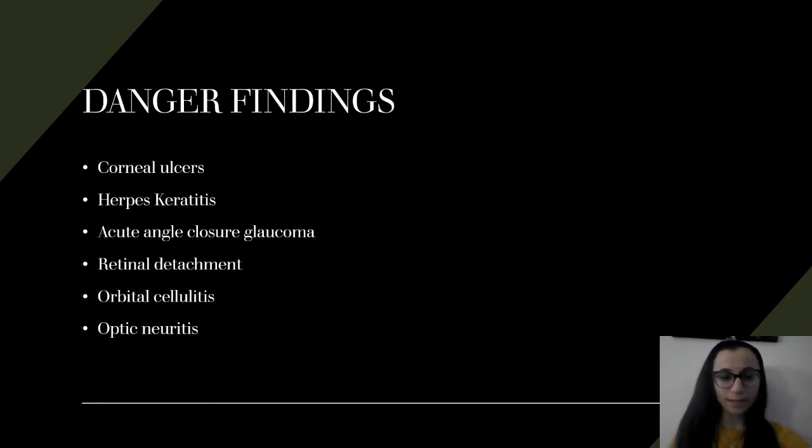Orbital cellulitis is an infection involving the content of the orbit. It's usually a lot of times will come with a history of upper respiratory infection, sinusitis. This is pretty serious. They're going to come in with symptoms of eyelid edema, conjunctival congestion, eye pain. You want to refer them immediately to the emergency room for IV antibiotics.